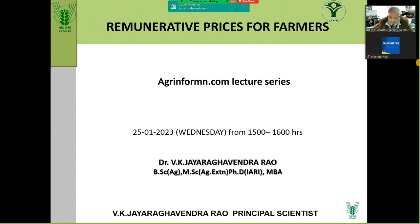Suppose you are a central government employee — how is your DA calculated? DA is calculated based on the consumer price index to ensure you can meet the basic cost of living. Today the million dollar question is whether farmers are getting enough remuneration, whether they are able to meet costs, run the family, and have access to health and education.